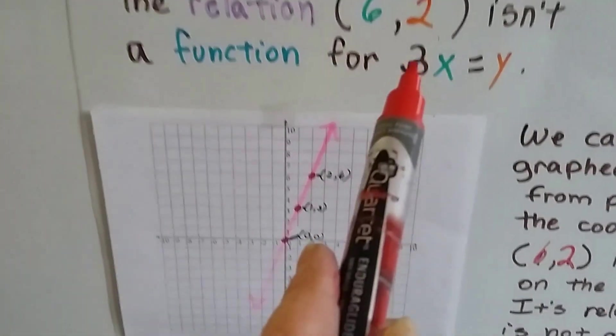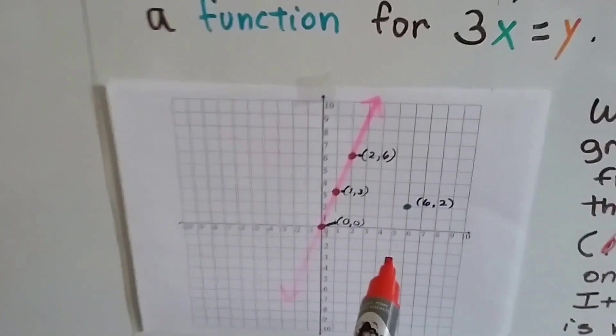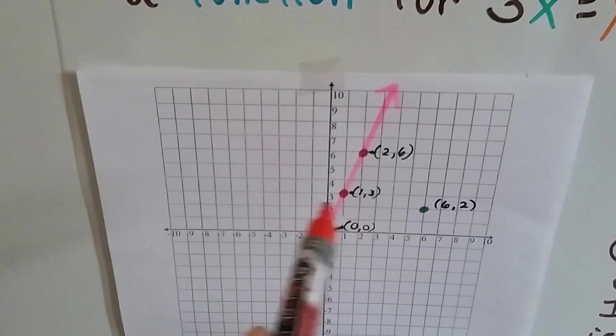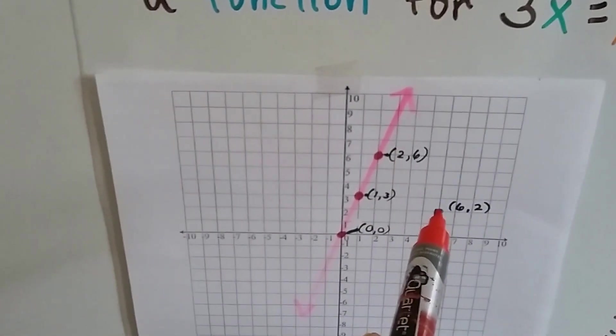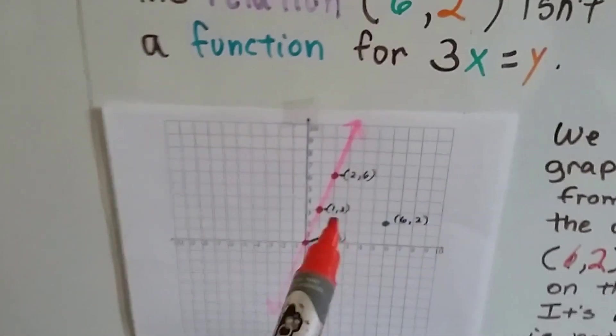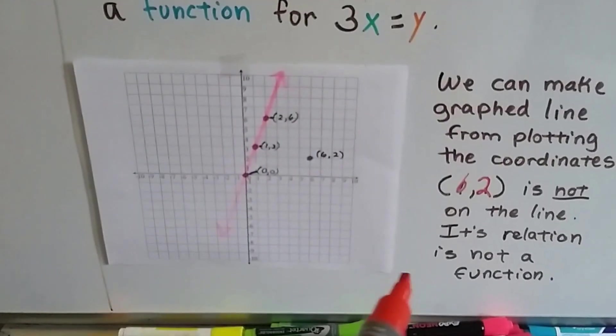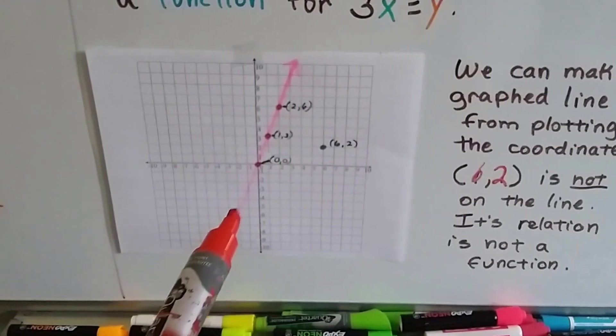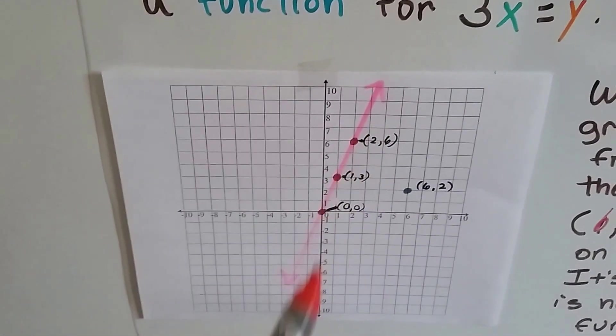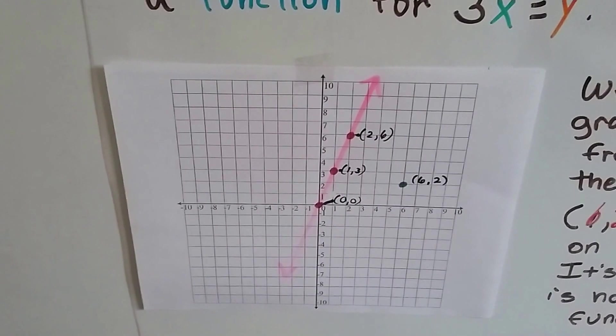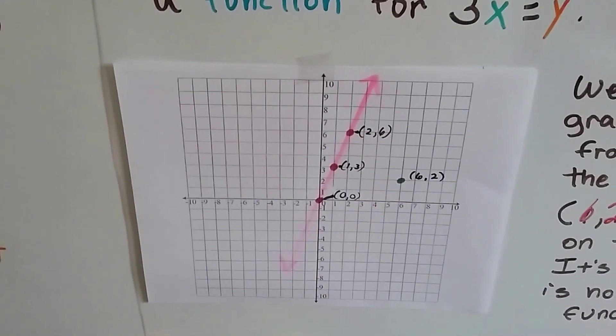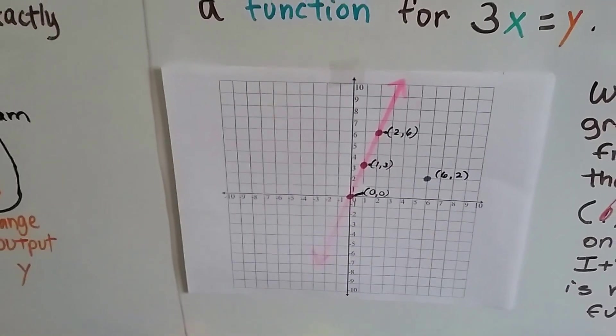But when we try to plot the 6 and the 2, 6 for x and 2 for y is way over here. It's not on the line at all. So that's not a function. See that? It's not on the line. Its relation to these is not a function. It's got nothing to do with him. He's way out in the side.